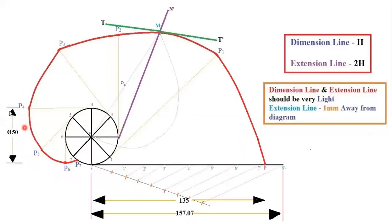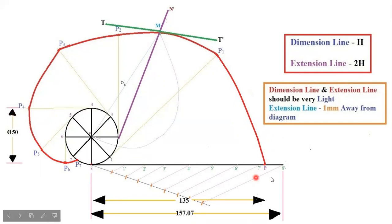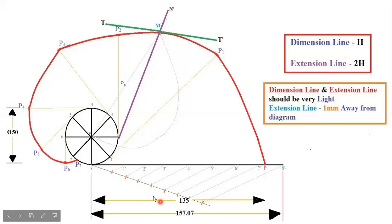For dimensioning, draw an extension line away from the diagram. Dimension the diameter of the circle as 50 mm. Extension lines should use a 2H pencil, dimension lines an H pencil, and arrowheads should be sharp, pointed, and drawn with an HB pencil. Also dimension the circumference of the circle as 157.07 mm — leave a 1 mm gap before the dimension line. Then dimension the string length as 135 mm by drawing an extension line from point P.